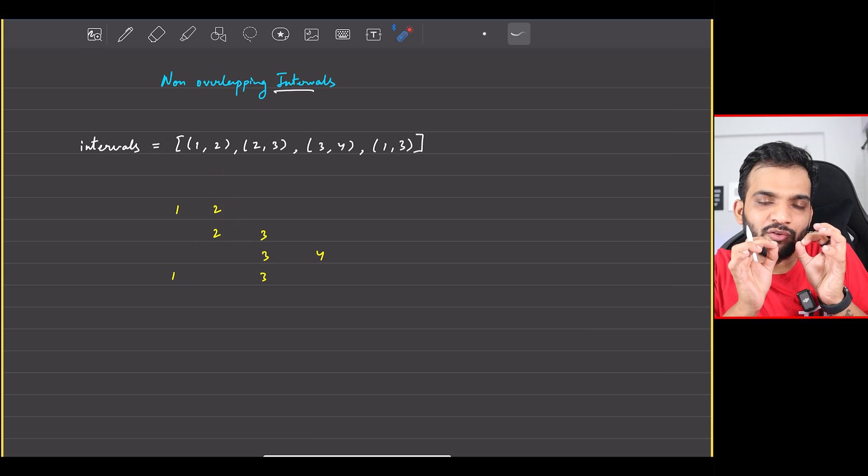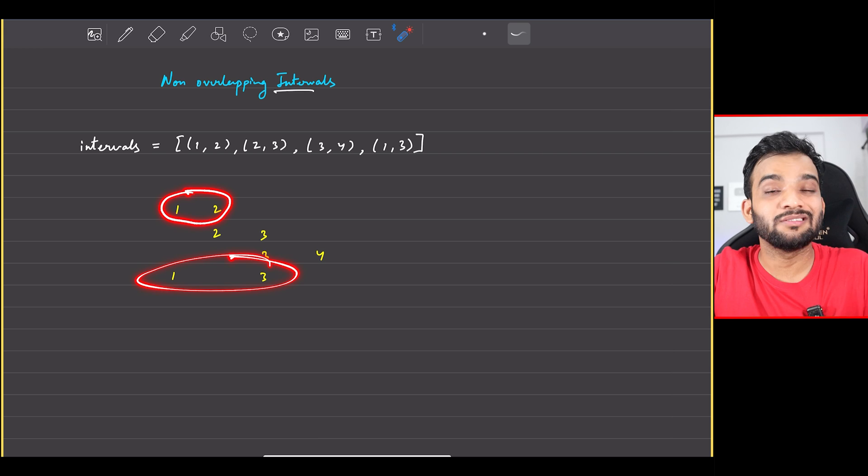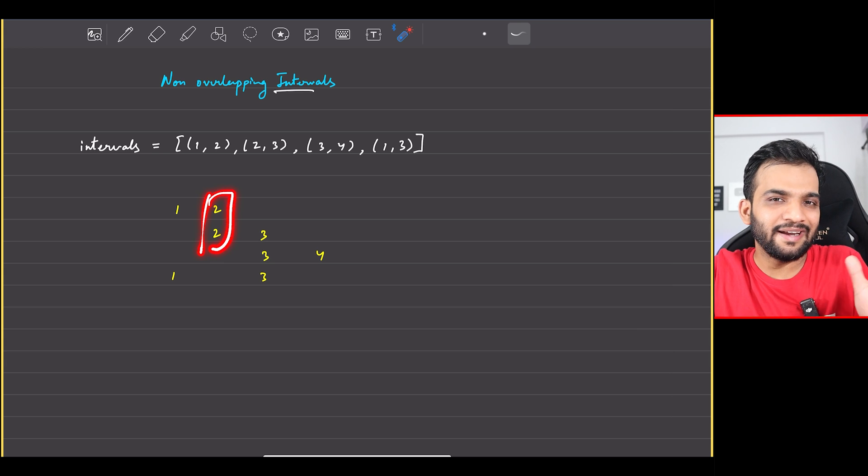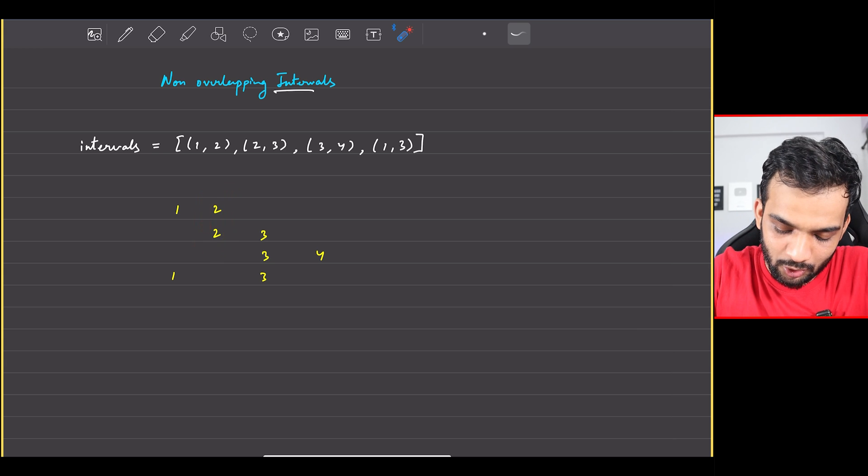What is the definition of overlapping? (2,2) - you cannot call this overlapping. The definition of overlapping is something like this: (1,2) and (1,3) are overlapping because somewhere they'll have to intersect, not at the same ending and starting point, but apart from it somewhere else.